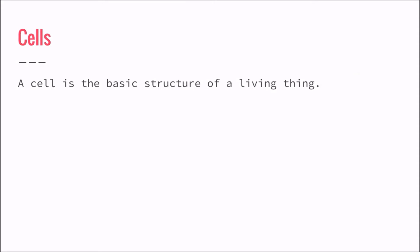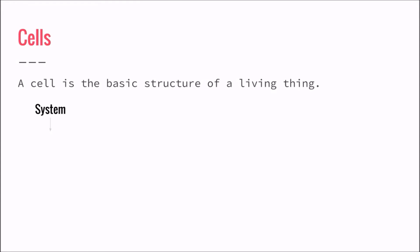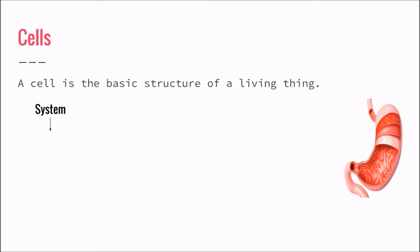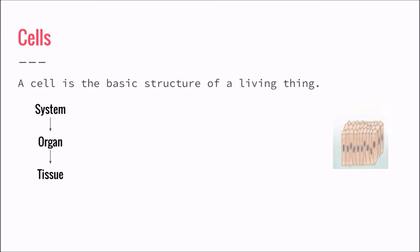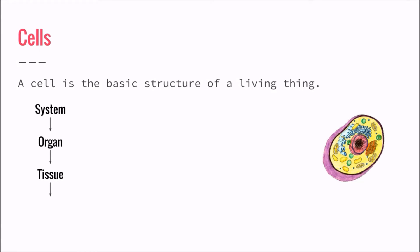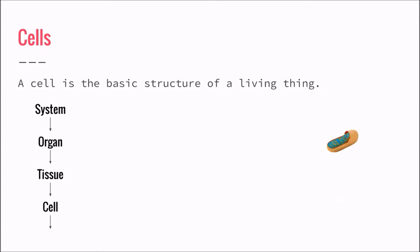An example is the digestive system. It is made up of many organs including the stomach. The stomach is an organ which is made up of tissues. These tissues include the epithelial tissue, which is made up of cells, and these cells are made up of organelles.